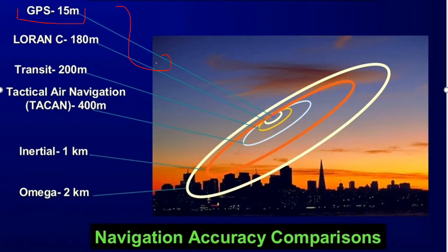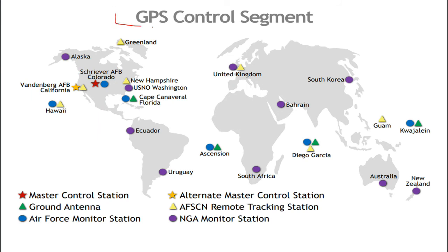Compared to other navigation systems, GPS provides 15-meter accuracy, while LORAN C provides 180 meters, Transit provides 200 meters, Tactical Air Navigation TACAN provides 400 meters, Inertial provides 1 kilometer, and Omega provides 2 kilometers. GPS accuracy is the best among navigation systems.